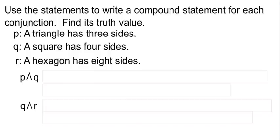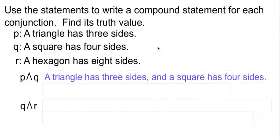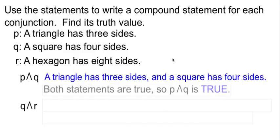Let's put a few compound statements together and talk about truth values. I'm going to have three statements here. A triangle has three sides, I'm going to use that as P. Q is going to represent 'a square has four sides,' and R is going to represent 'a hexagon has eight sides.' We're doing conjunctions on this part. They want me to do the conjunction P and Q. To write that in words, P represents 'a triangle has three sides,' Q is 'a square has four sides.' So my conjunction would be 'a triangle has three sides and a square has four sides.' Part P is true, a triangle does have three sides. Part Q is also true, a square does have four sides. Since both are true, I can say P and Q is a true statement.